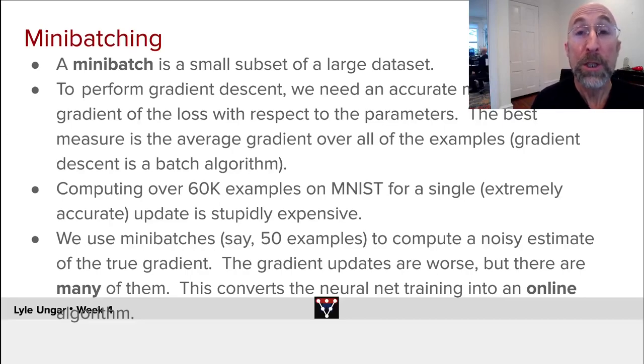The first variation of gradient descent that we'll look at is mini-batching. It's a super simple idea. Instead of taking a gradient by averaging over all of the perhaps millions of observations in the training set using standard gradient descent, or instead of taking a single point and doing stochastic gradient descent where we move in the direction that reduces the error for that one point,